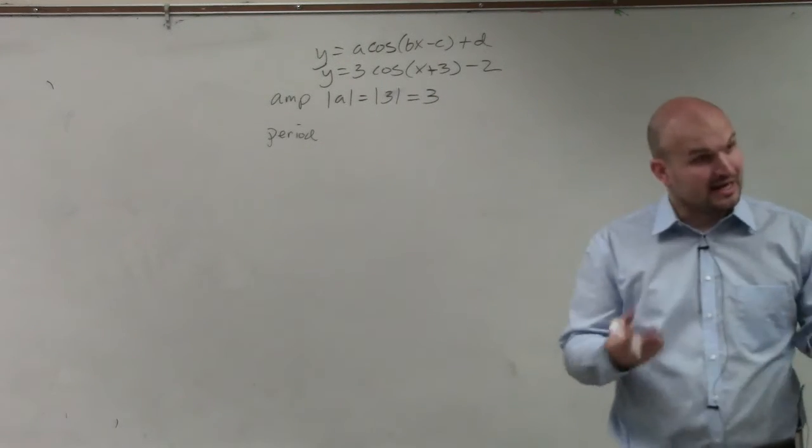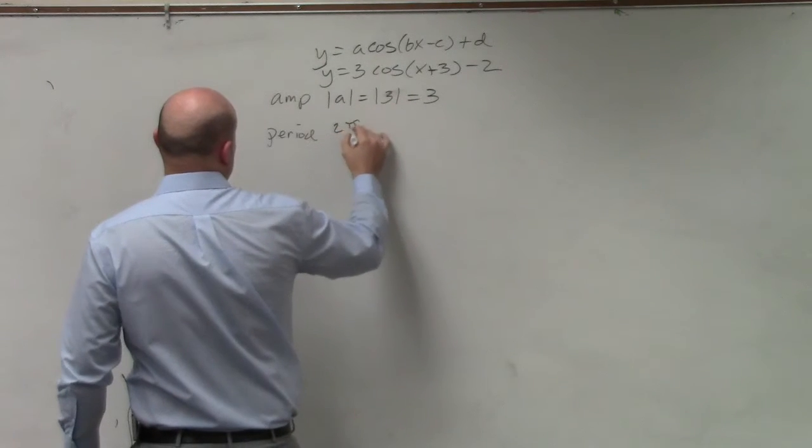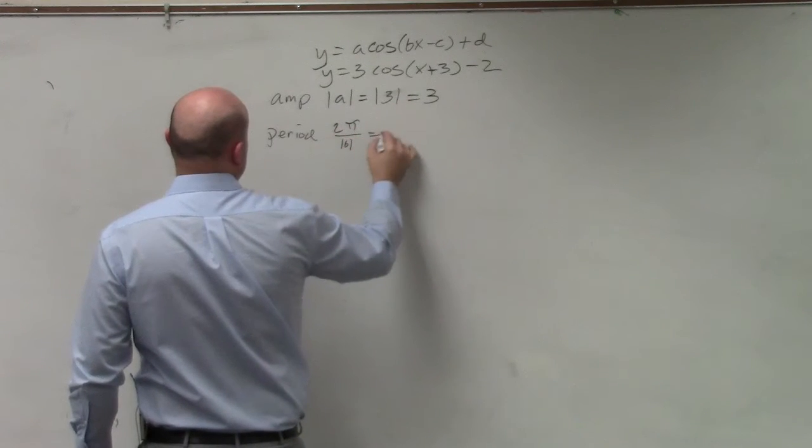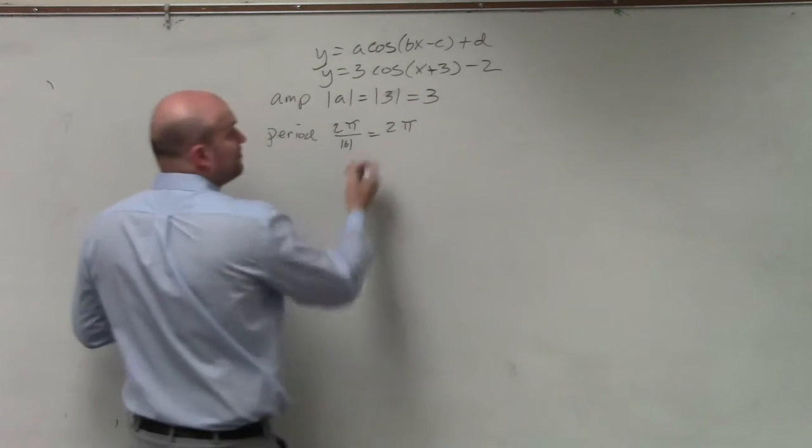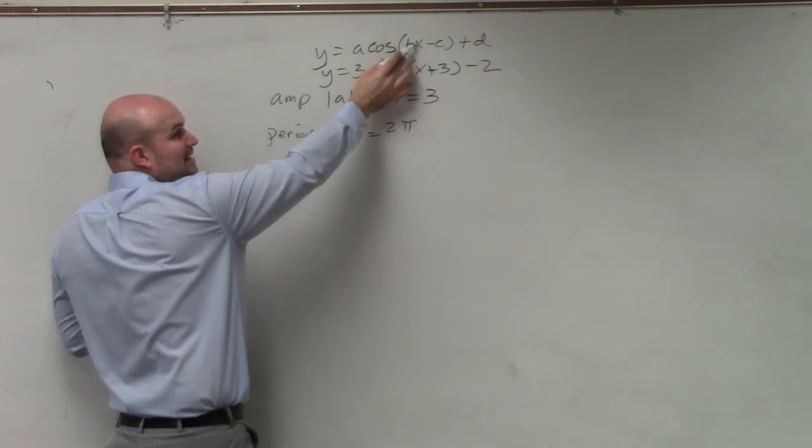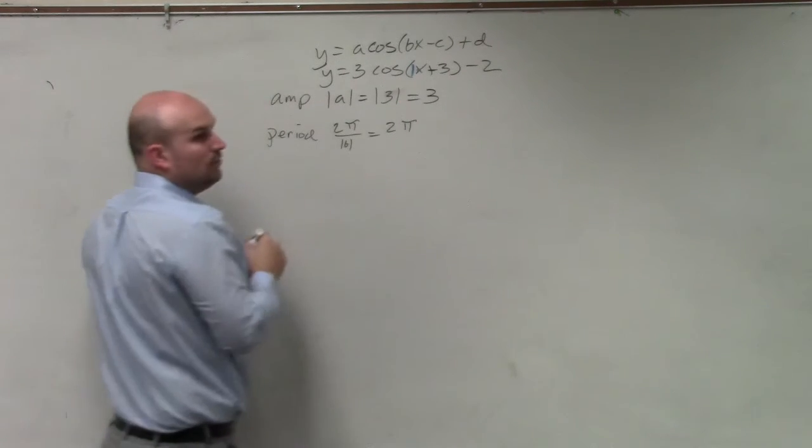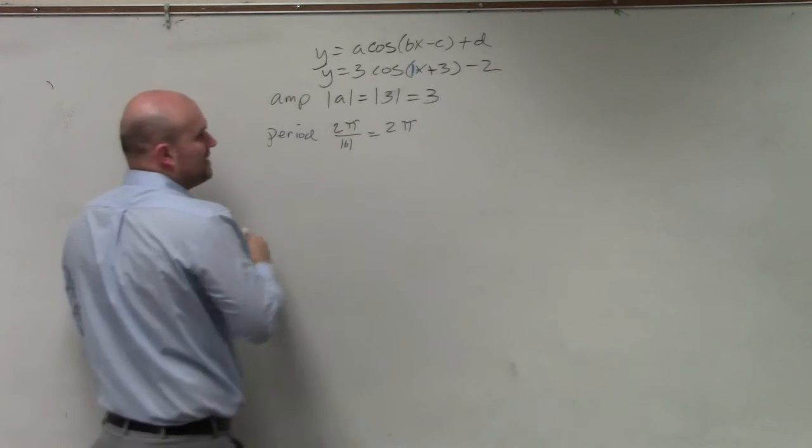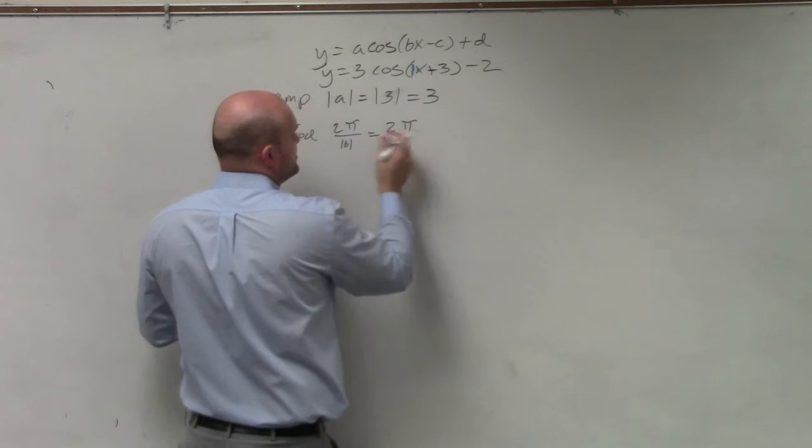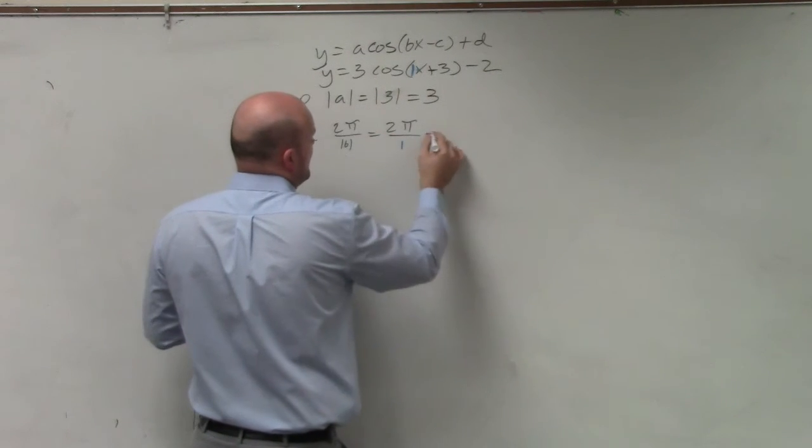The period is, again, how long it takes to repeat itself. That is 2π divided by absolute value of b. So that's going to be 2π. Now, b is what's being multiplied by my x, which in this case would be 1. So 2π divided by 1 is just going to be 2π.